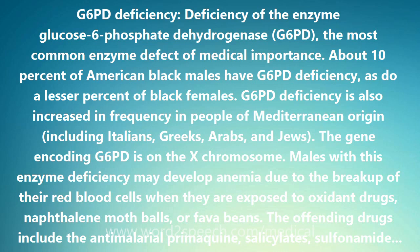resulting in anemia and jaundice. The concentration of G6PD deficiency in certain populations is believed to reflect the protective effect it afforded — much like sickle cell trait — against malaria.